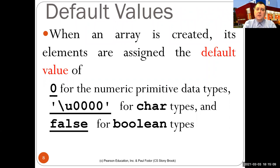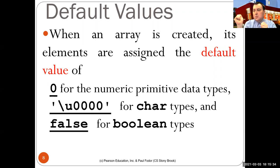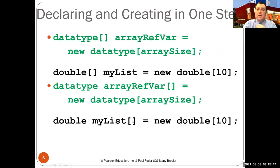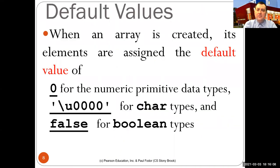When an array is created, its elements are assigned default values: zero for numerical primitive types, the character with Unicode zero for character types, false for booleans, and null for strings or any other reference types. So declaring 'double[] myListEmpty = new double[10]' means myList[0] through myList[9] are all zero and you can use them right away without assigning different values if zero is what you want.